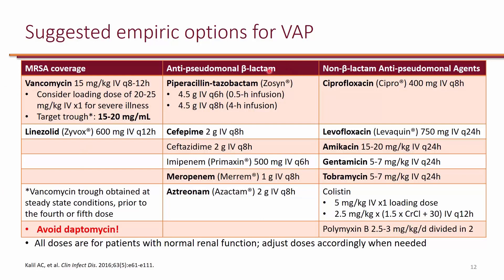For the two agents used against Pseudomonas, one should be a beta-lactam and the second should be a non-beta-lactam. Beta-lactam options include piperacillin-tazobactam, cefepime, ceftazidime, imipenem, meropenem, or aztreonam. Non-beta-lactam options include ciprofloxacin, levofloxacin, amikacin, gentamicin, or tobramycin.